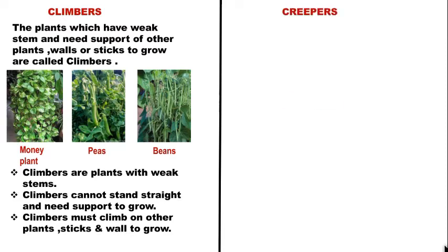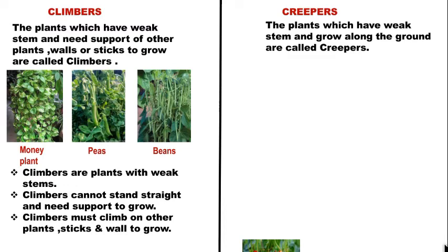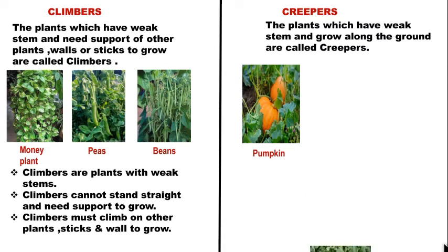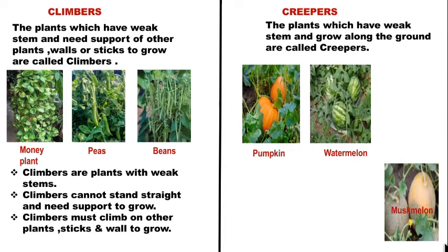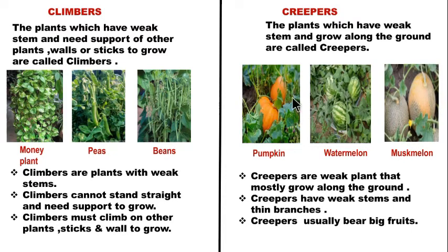The next type of plants are creepers. Plants which have weak stems and grow along the ground are called creepers. For example: pumpkin, watermelon, muskmelon. As you can see in this picture, these plants have weak stems and grow along the ground. Creepers have weak stems and thin branches, and they usually bear big fruits — as we can see in watermelon.